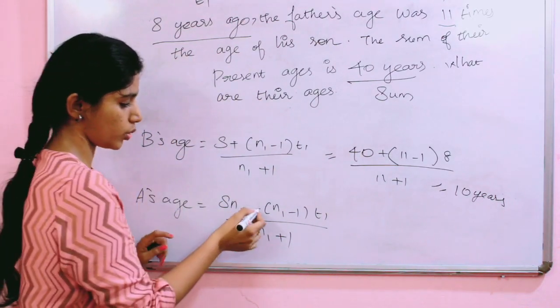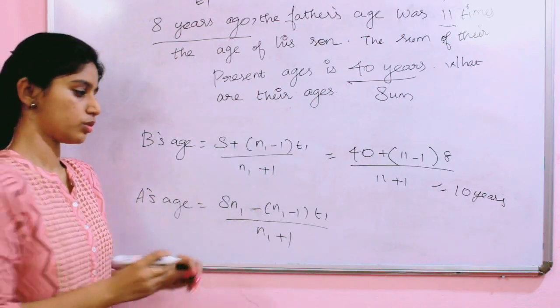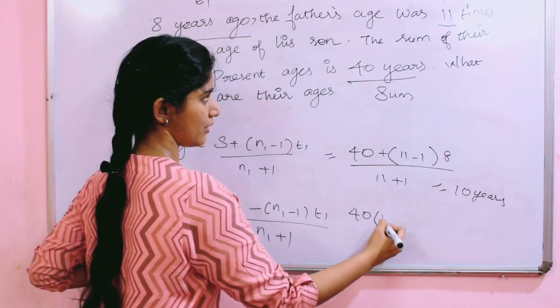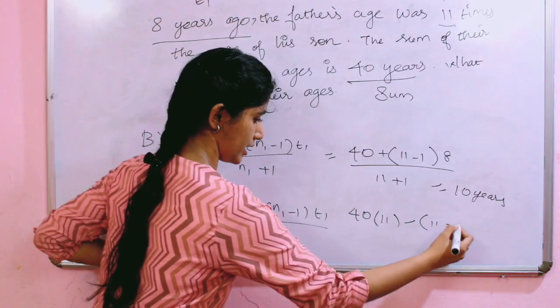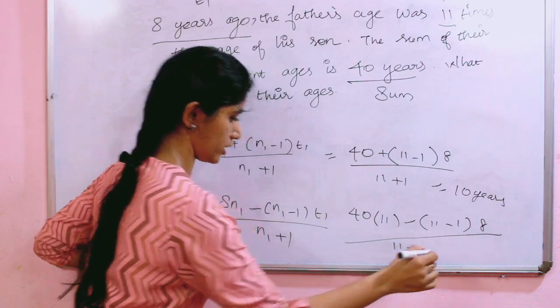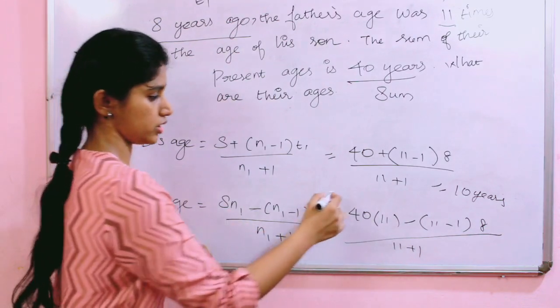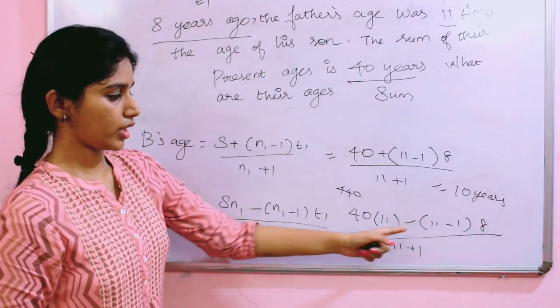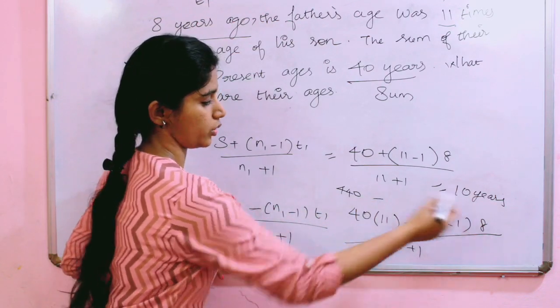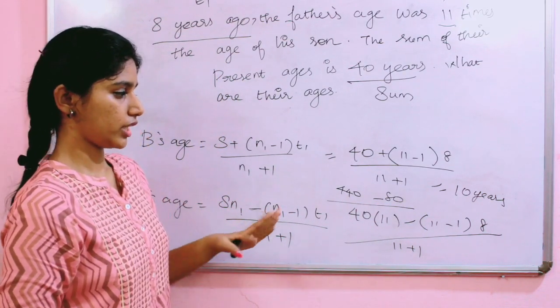So A's age: this is plus and minus difference. And extra is N1 multiply. So 40 into N1 is 11 minus, 11 minus 1 of 8, by 11 plus 1. 40 into 11 is 440. 440 minus 11 minus 1 is 10. So 440 minus 10 into 8 equals 80.